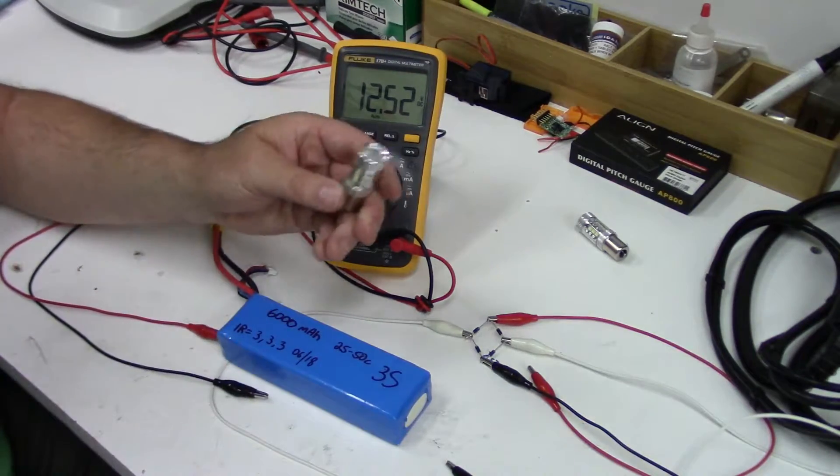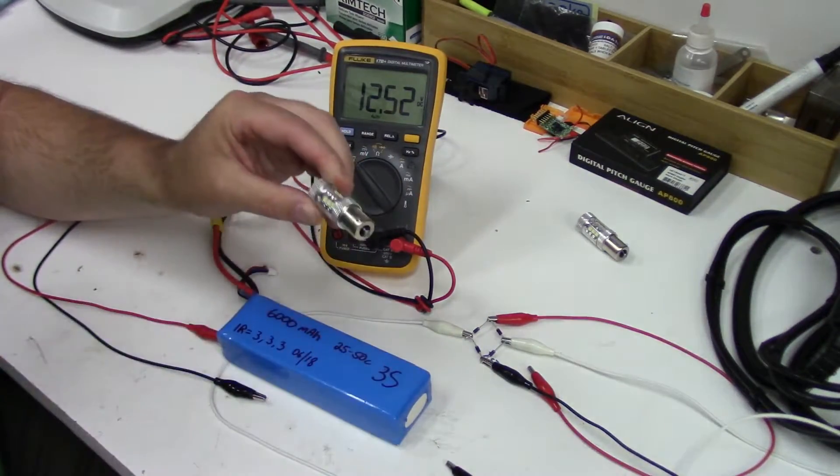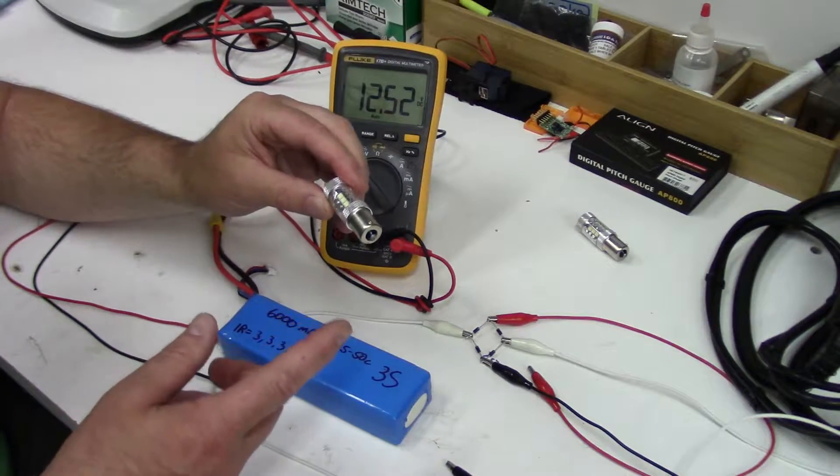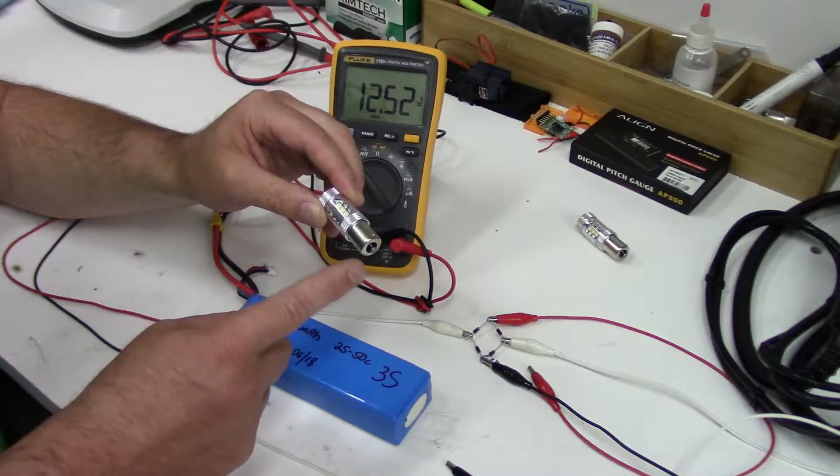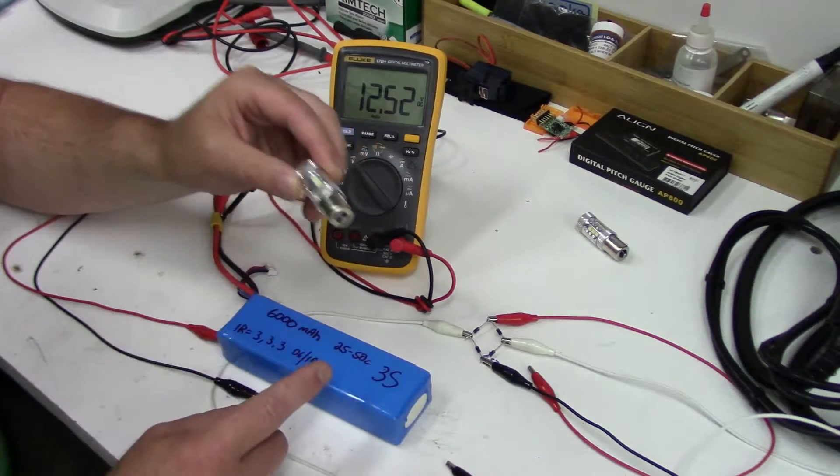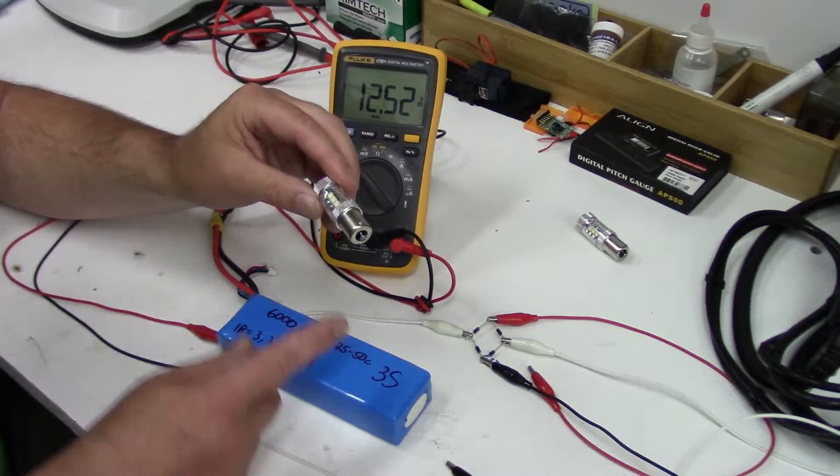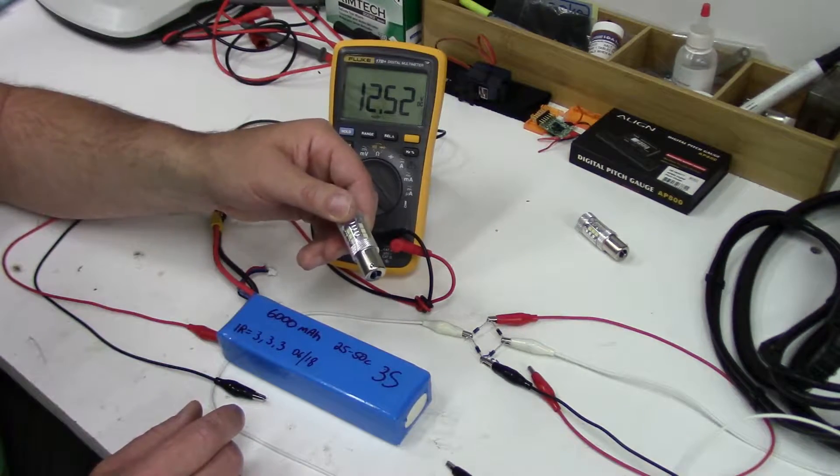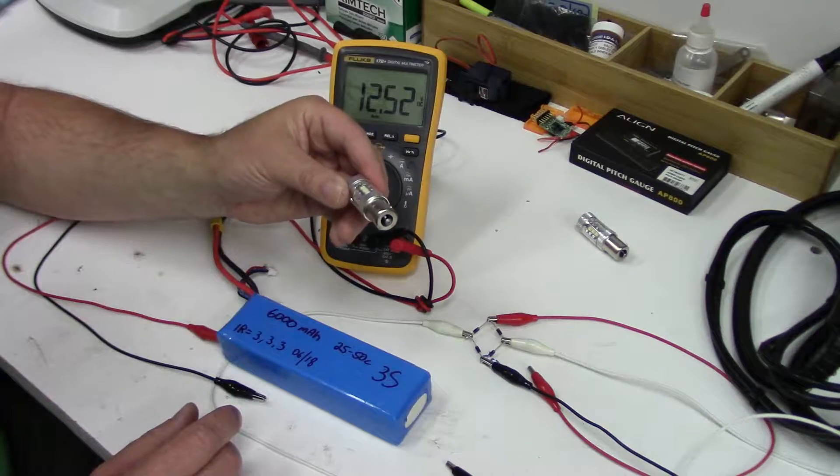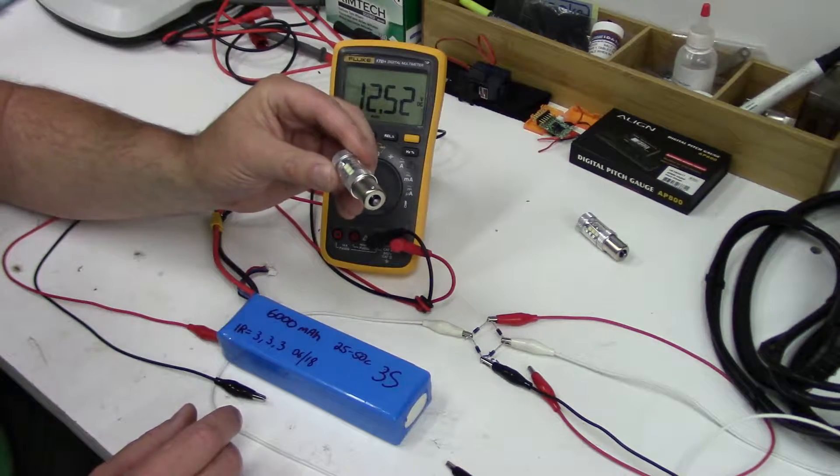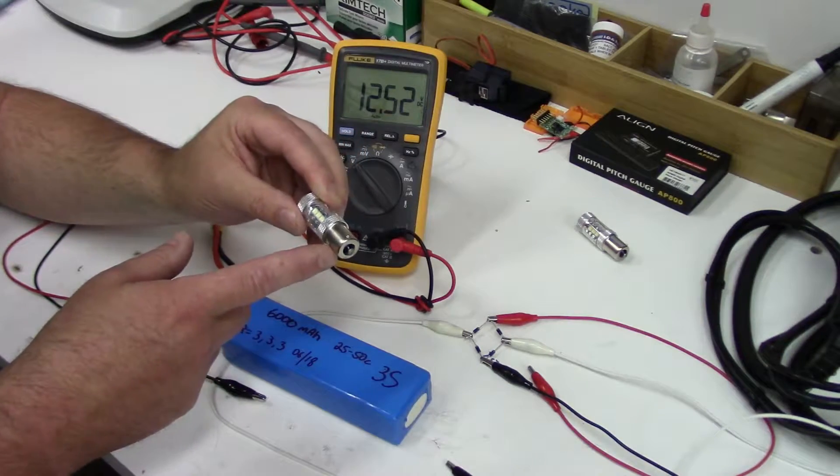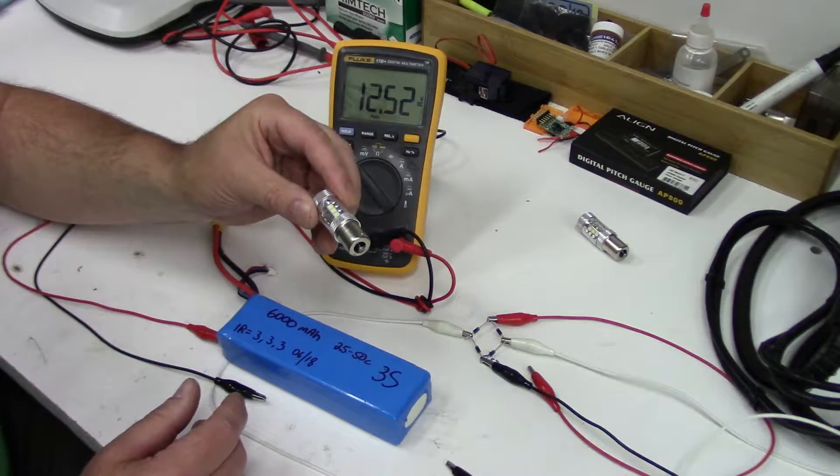So the reason for that is these have something called a rectifier in them. A rectifying bridge. And what that does, it doesn't matter which way you've got the polarity on these. These will work with this positive, this negative, or vice versa. So no worries about blowing them up if you hook them up backwards and you don't have to worry about checking your sockets in your riding mower.